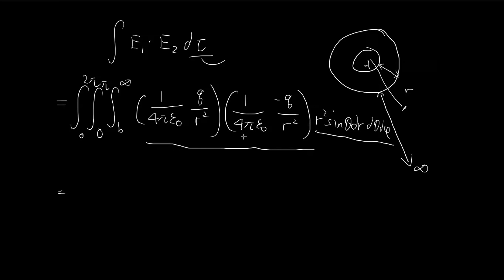So we can try pulling all the constants out first. There's 16 pi squared epsilon squared, and negative q squared. And then you see that there are no phi terms, so I can get rid of the integral from 0 to 2 pi. There is one sine theta term, and then integrating from 0 to pi, that's equal to 2.